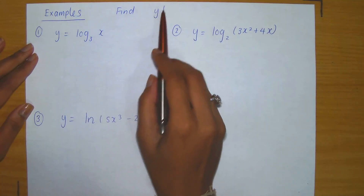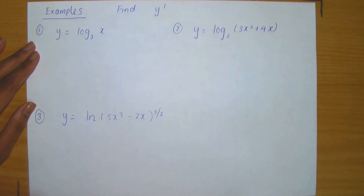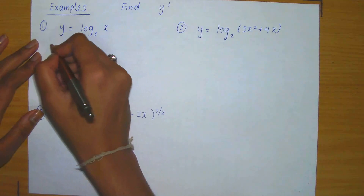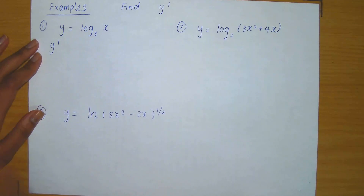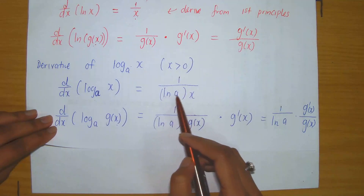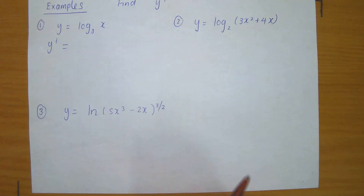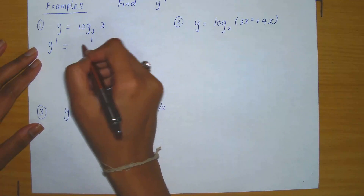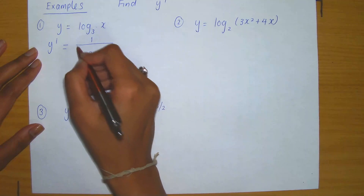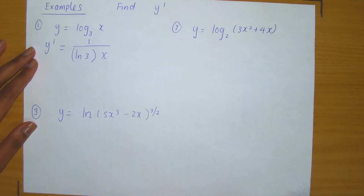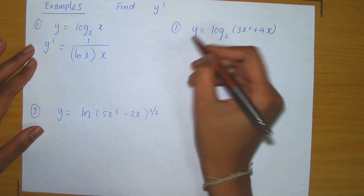Let's now apply these formulas to some examples. We are required to compute the derivative of the following functions. We are given that y equals log base 3 of x, so what is y prime? Our formula tells us it's 1 divided by ln of base a times the variable, so with base 3 it's 1 divided by ln 3 multiplied by x. It's as simple as that.